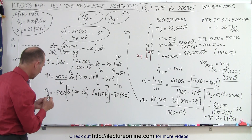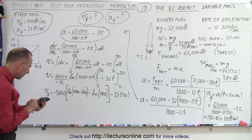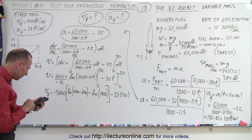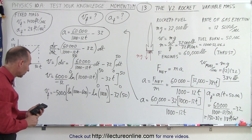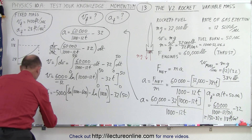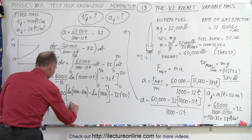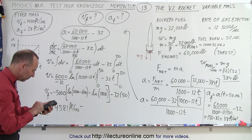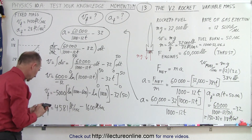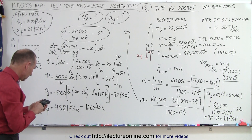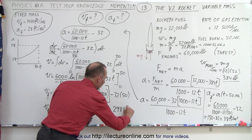Plugging in the lower limit gives zero for the 32T term. Calculating: take the natural log of 400, minus the natural log of 1,000, multiplied by negative 5,000. That gives us 4,581 feet per second. Then we subtract 32 times 50, which is 1,600 feet per second. So 4,581 minus 1,600 equals a net velocity of 2,981 feet per second.